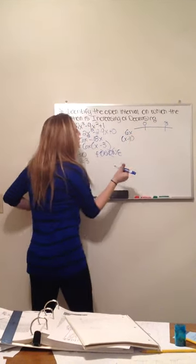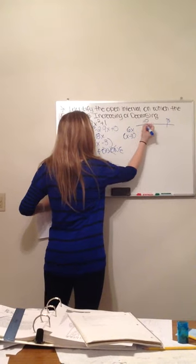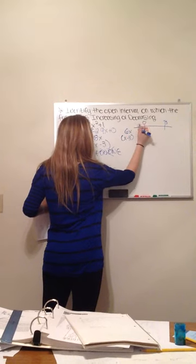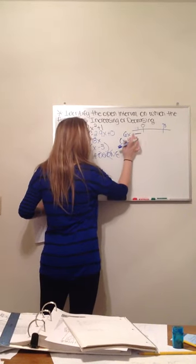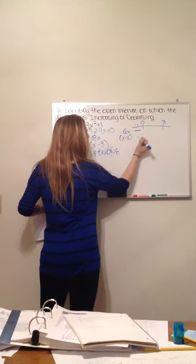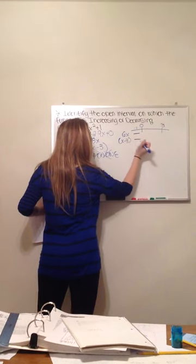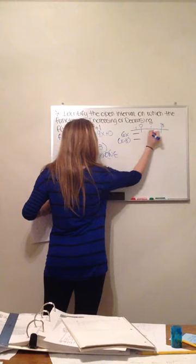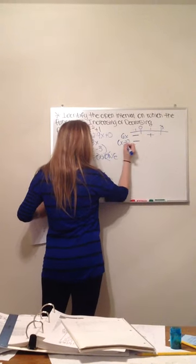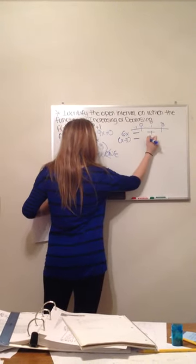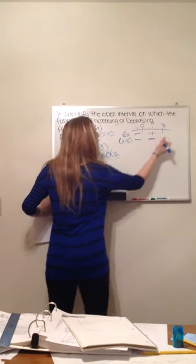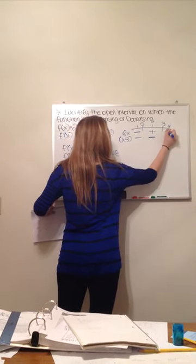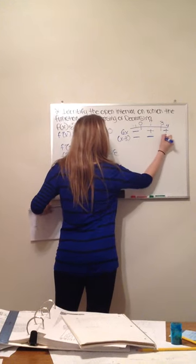You want to pick a number in each interval. An easy one would be negative 1. 6 times negative 1 would be negative, and negative 1 minus 3 would also be negative. Then you can pick 1. 6 times 1 would be positive, and 1 minus 3 would be negative. Then we can pick 4. 6 times 4 is positive, and 4 minus 3 is positive.